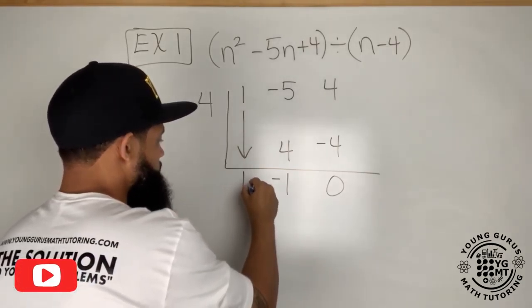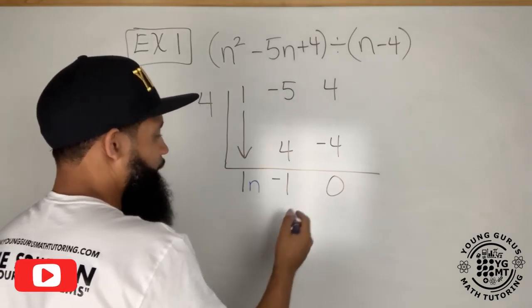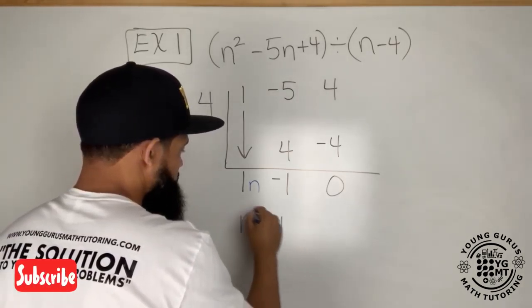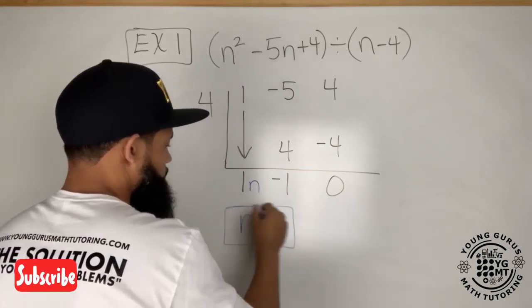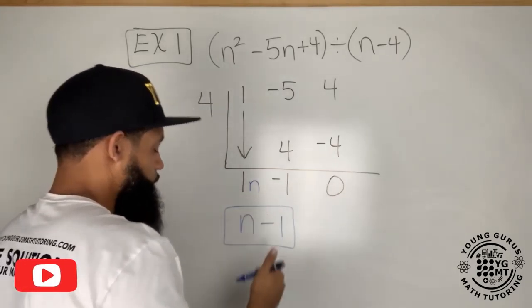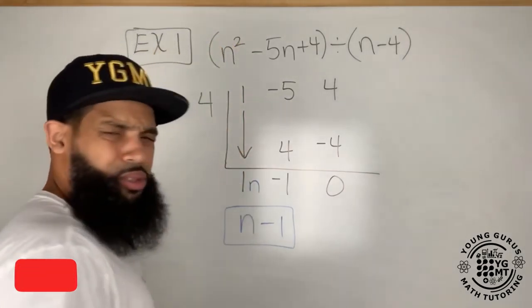I get this. I always bring down that first number right here, one. I multiply this one times the number on the outside, one times four is four, and then I add these. Negative five plus four is negative one. I multiply the four by negative one, that gives me negative four. I add these, I have zero.